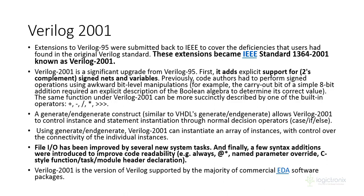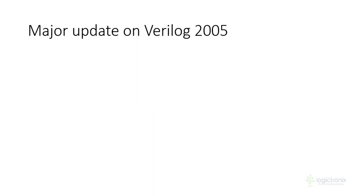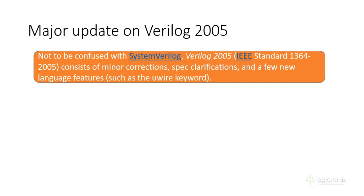Verilog 95 is older and only a few updated tools prefer 2005. Actually most tools support 2005, but most designs use 2001. In the 2005 revision there is also SystemVerilog, which we are going to talk about. SystemVerilog has different specifications.